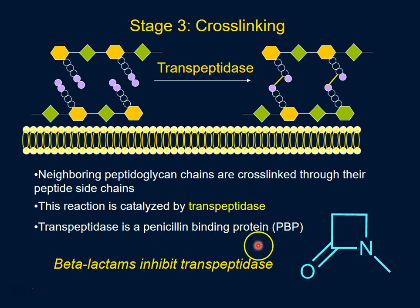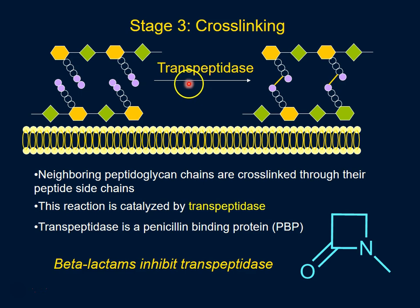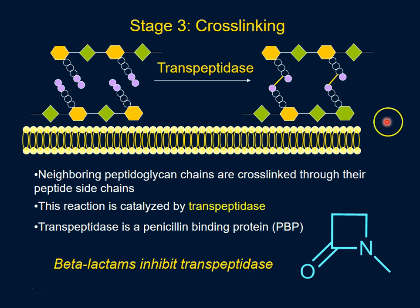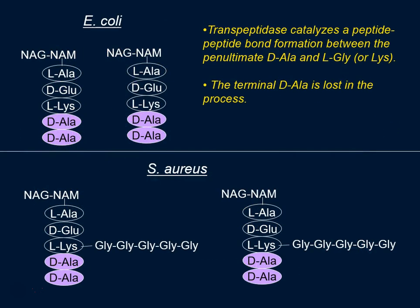This is important because there are many other penicillin-binding proteins — transpeptidase happens to be one of them. Transpeptidase is the target for beta-lactams, so all the antibiotics including penicillins and cephalosporins will inhibit the transpeptidase, acting at stage three of cell wall biosynthesis. Let's look at this cross-linking in a little bit more detail.